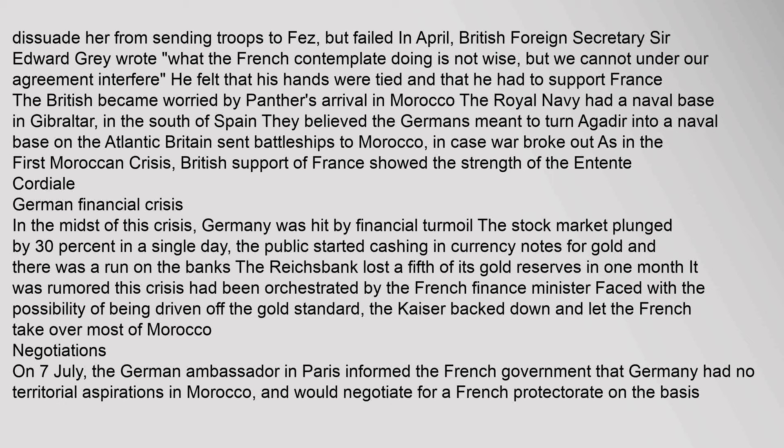In the midst of this crisis, Germany was hit by financial turmoil. The stock market plunged by 30% in a single day. The public started cashing in currency notes for gold and there was a run on the banks. The Reichsbank lost a fifth of its gold reserves in one month. It was rumoured this crisis had been orchestrated by the French finance minister. Faced with the possibility of being driven off the gold standard, the Kaiser backed down and let the French take over most of Morocco.